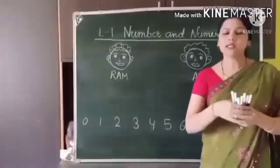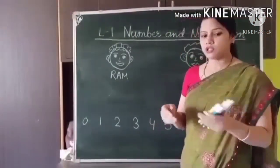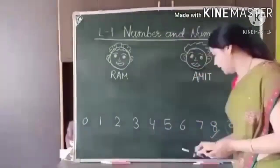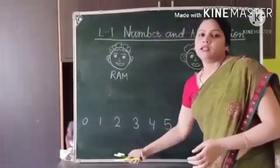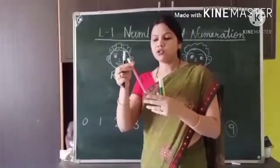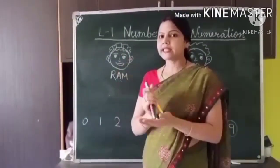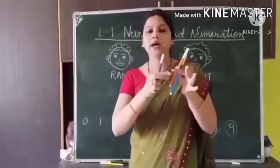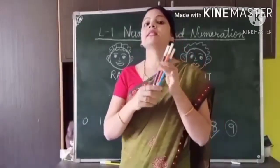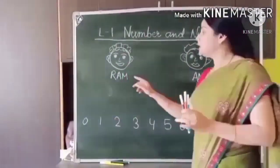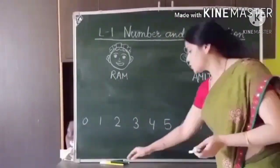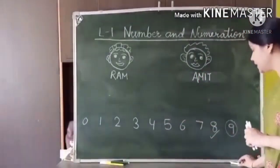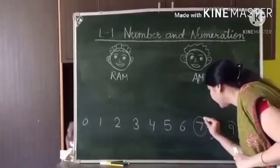Now check whether 7 can be distributed equally. I distribute: 1, 2, 3, 4. Ram got 1, 2, 3, 4 sketch pens. And Amit got only 1, 2, 3 sketch pens. Again, Amit got fewer sketch pens than Ram. So number 7 can also not be equally distributed among 2 persons. Make a circle on it.